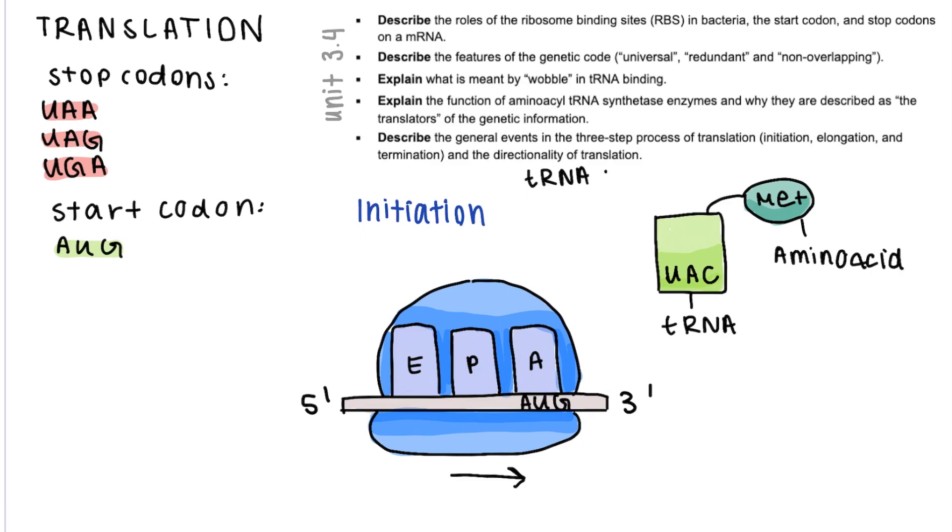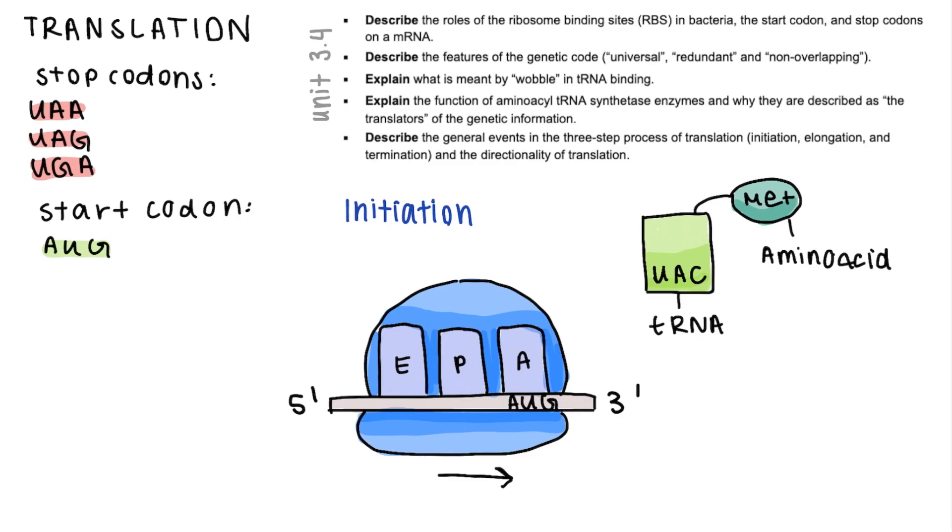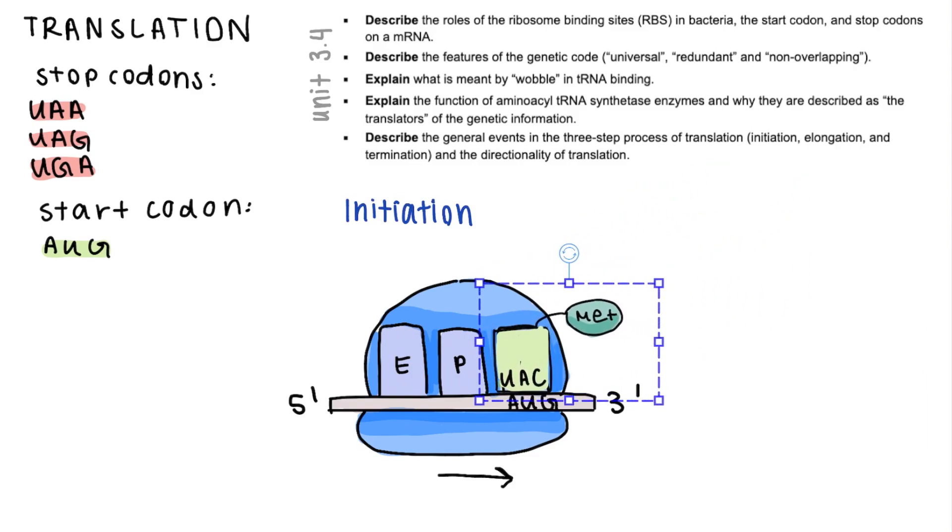This attachment is mediated by an enzyme called tRNA synthetase. Since these enzymes are the ones that kind of know which codons respond to which amino acids, they are described as the translators of genetic information. So now back to our AUG on this mRNA. The corresponding tRNA with the methionine amino acid attached to it will come into the A site of the ribosome. Here the AUG codon will bind to its anticodon to make sure that it corresponds to it.